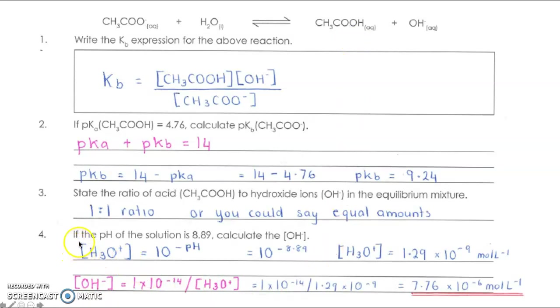Question 4, they've given us the pH of the solution at 8.89, and we can convert that to the hydroniums by using the inverse log, 10 to the minus pH, which gives us our hydroniums. From there, we can find our hydroxides using the water dissociation rearranged, which is that answer there.